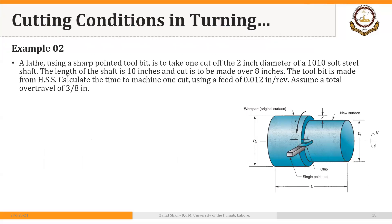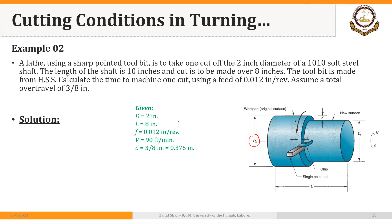A lathe using a sharp-pointed tool bit is to take one cut on a 2-inch diameter 1010 soft steel shaft. The length of the shaft is 10 inches and the cut is to be made over 8 inches. The tool bit is made from high-speed steel. Calculate the time to machine one cut using a feed of 0.012 inches per revolution, with a cutting speed of 90 feet per minute and a total over travel of three-eighths of an inch.